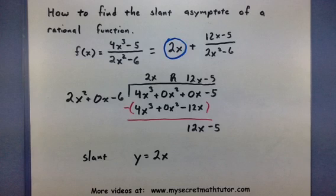And there you go. So always look for the quotient when looking for that slant asymptote. If you'd like to see some more videos, please visit MySecretMathTutor.com.